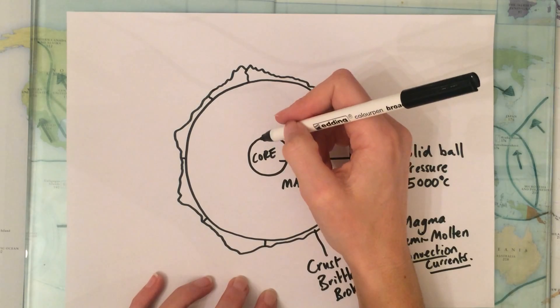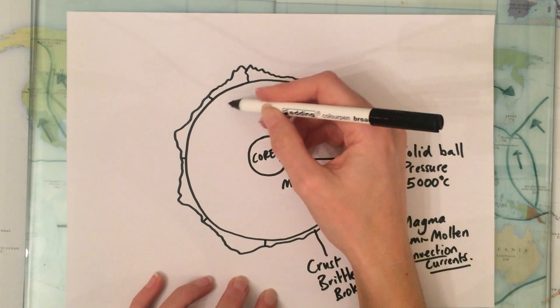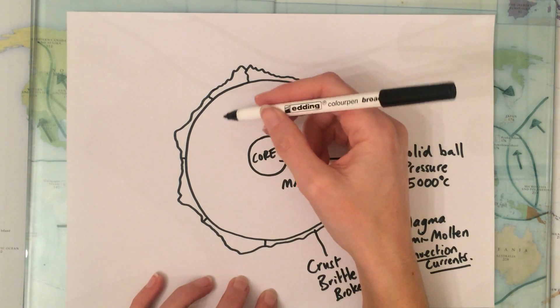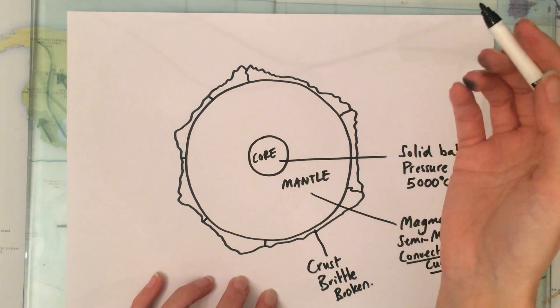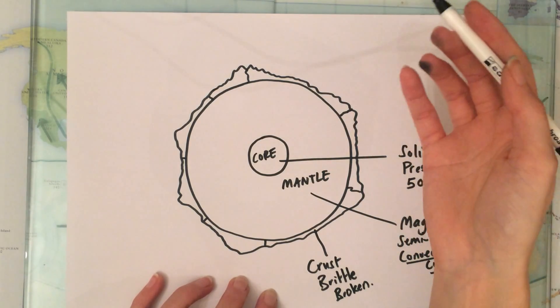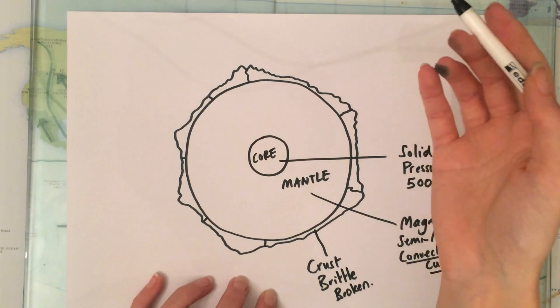And that heat causes the magma to swirl around due to convection, just like if you put your saucepan on the stove and you put the heat on, over time the water will start to move and bubble and boil and it's the same principle.